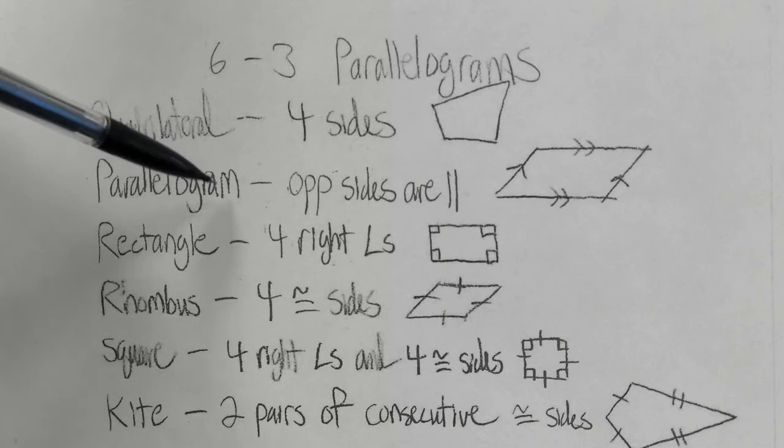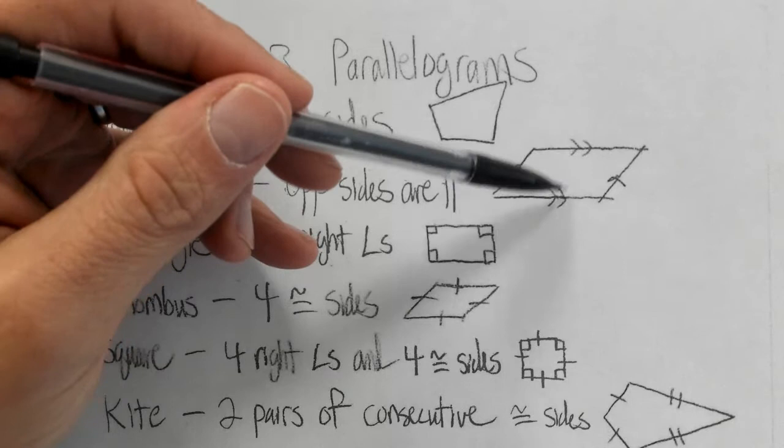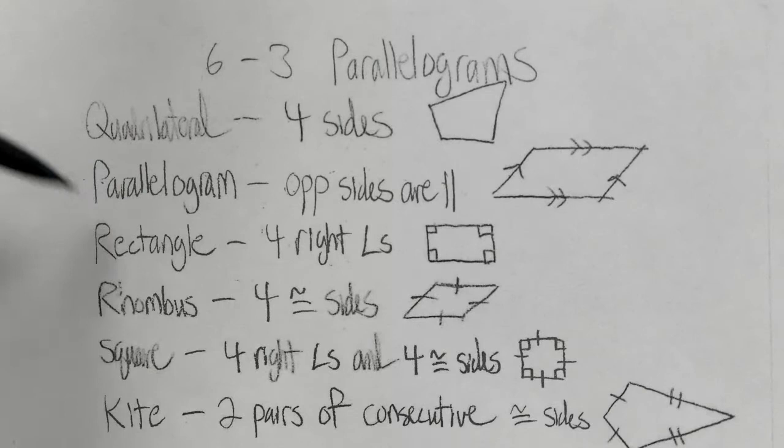The next one is a parallelogram. In a parallelogram, the opposite sides are parallel — the top and the bottom are parallel, and the left and the right are parallel. We're just identifying the different ones; we'll look at some of the characteristics and properties as the sections move forward.